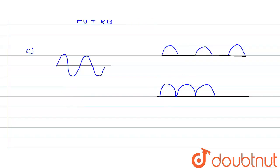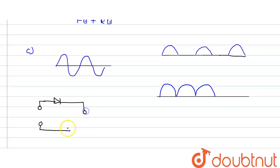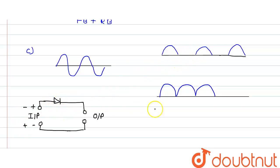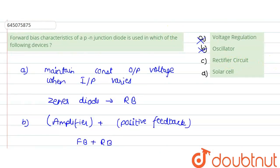In the full wave rectifier, in one part of the cycle it is behaving as forward bias, and in another part also it is behaving as forward bias. Drawing a representative figure — let's say this is our PN junction diode, we supply the input from one side and get the output from the other. In the positive cycle it behaves as forward bias; when polarity changes it becomes reverse bias and no current flows. So the rectifier circuit is based on the forward bias principle — it allows current to flow only in the forward bias condition.